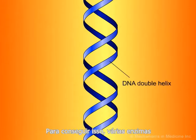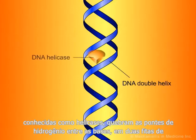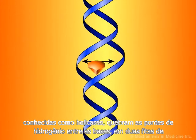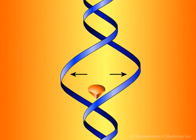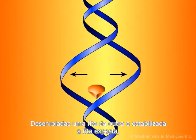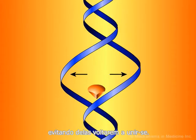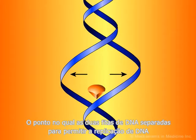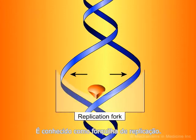To accomplish this, various enzymes known as helicases break the hydrogen bonds between the bases in the two DNA strands, unwind the strands from each other, and stabilize the exposed single strands, preventing them from joining back together. The points at which the two strands of DNA separate to allow replication are known as replication forks.